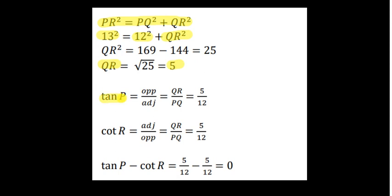So tan P is equal to opposite by adjacent. Opposite to P is QR, adjacent is PQ, that gives us 5 by 12. And cot R is equal to adjacent by opposite. Adjacent to R is QR and opposite to R is PQ, that gives us 5 by 12.